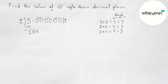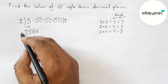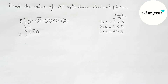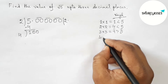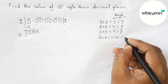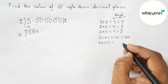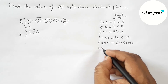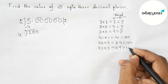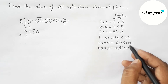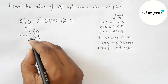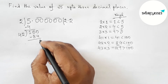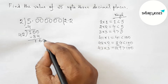Write down the first pair of zeros and draw the division line. Next, take double of 2, giving 4. Put a number beside 4 and multiply by that number which is less than 100 and more closer. Putting 1 gives 41, not close enough. Putting 2 gives 42×2=84, less than 100 and more closer. Putting 3 gives 129, greater than 100. So putting 2, we get 84. Subtracting gives 16 remainder.